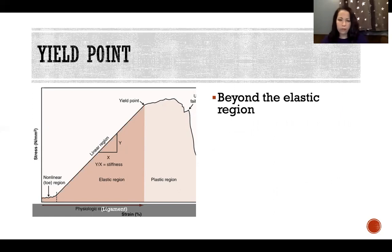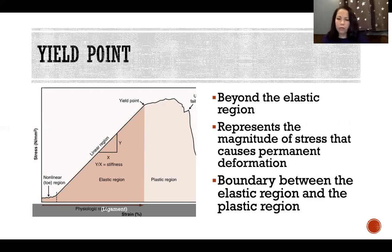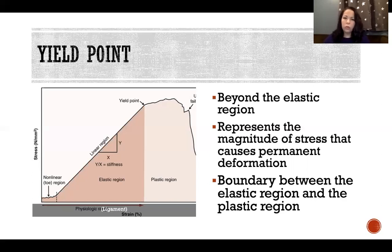The yield point, seen on the stress-strain curve at the top of the elastic region, represents the magnitude of stress that causes permanent deformation, and it forms the boundary between the elastic region and the plastic region. The plastic region is where some amount of the deformation caused becomes permanent. The yield point represents the amount of stress applied to the material that caused there to be permanent deformation — deformation that cannot return back to its original shape when the stress is removed.